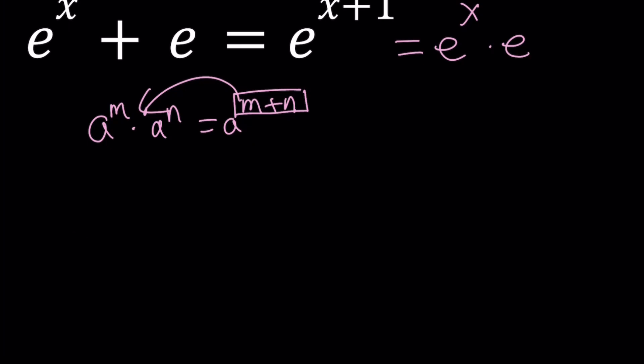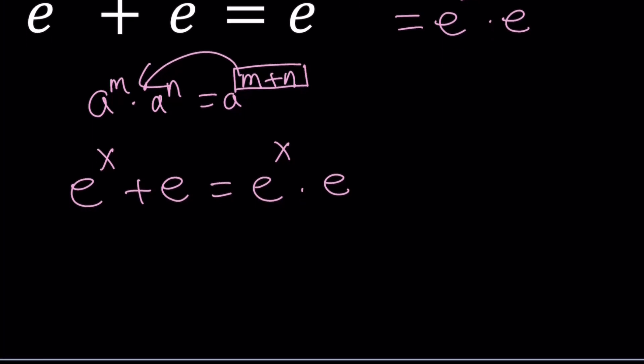We get e to the x plus e equals e to the x times e. It's really like a weird, eerie situation where we add two numbers and we multiply the same numbers and we get the same result. Is that even possible with numbers like 2 and 3? 2 plus 3 is 5, 2 times 3 is 6. That doesn't seem to work with numbers. But maybe you can try to find some numerical solutions. Let's go ahead and solve this problem.